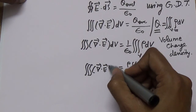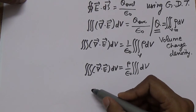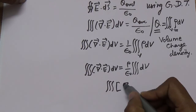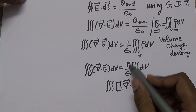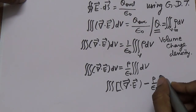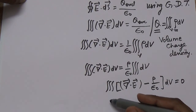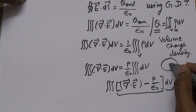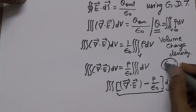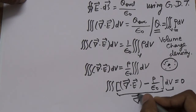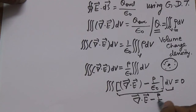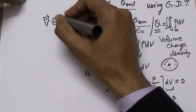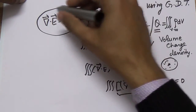Bringing the right-hand side to the left: the volume integral of (divergence of E minus rho/epsilon-naught) dV equals zero. Since the volume of the sphere cannot be zero, the inner factor must be zero. Therefore we conclude: del·E equals rho/epsilon-naught.